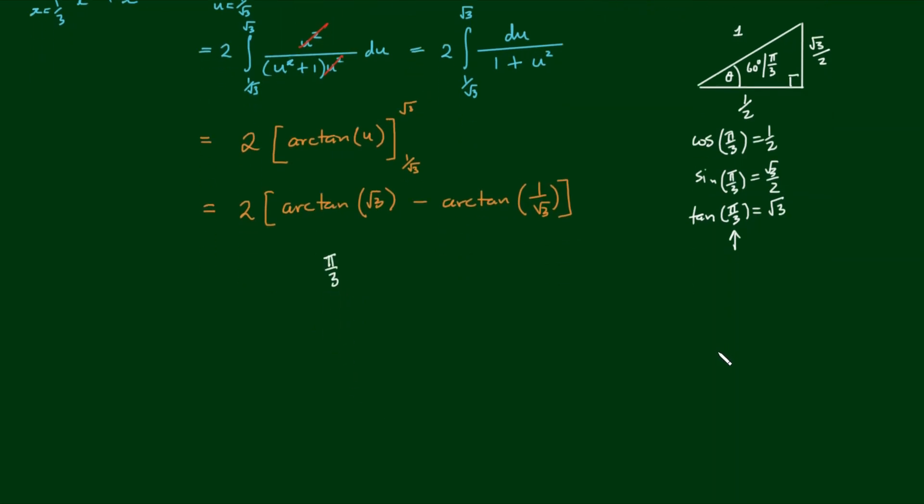You might also remember the triangle with hypotenuse of one, the vertical leg is equal to a half and the horizontal leg is equal to root three on two and the angle here being equal to 30 degrees or pi on six. So cosine of pi on six was equal to root three on two, sine of pi on six was equal to a half and the tangent of pi on six is equal to one on root three. So the arc tangent of one on root three is the angle pi on six.